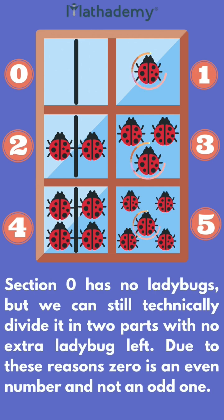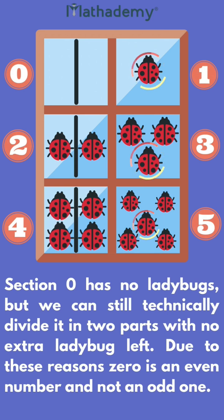Section 0 has no ladybugs, but we can still technically divide it into two parts with no extra ladybug left over. Due to these reasons, 0 is an even number and not an odd one.